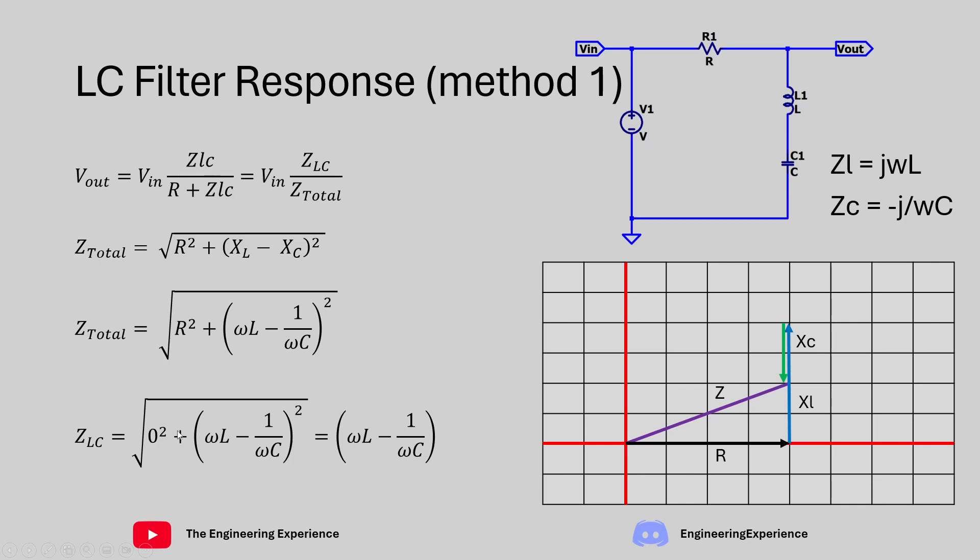So we can rewrite this equation as this. So the square root cancels out with the square and this zero squared becomes basically zero and we end up with this on top and this on the bottom. So we have ZLC is this value here and the Z total is this value here.